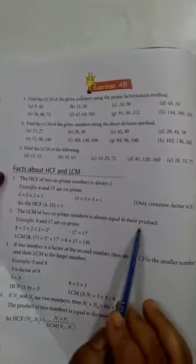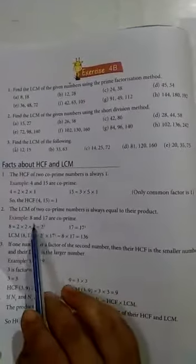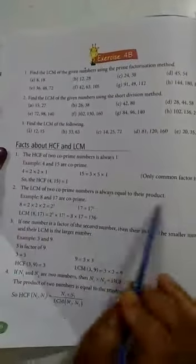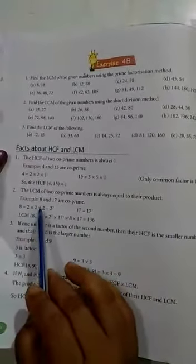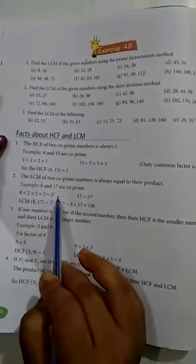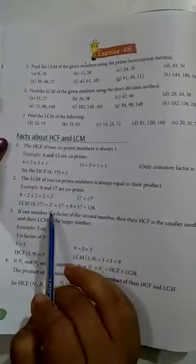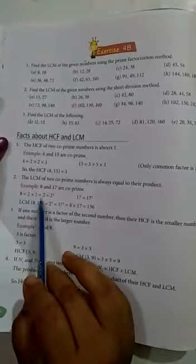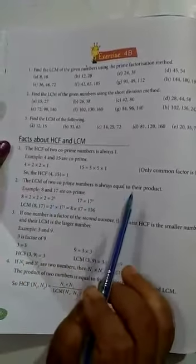The LCM of 2 co-prime numbers is always equal to their product. 8 and 17 are co-prime. We have studied prime factorization. How many times this factor? Three times. And 17 is one time. Now, if we take this LCM, it turns out 2 into 2 into 2 into 17.